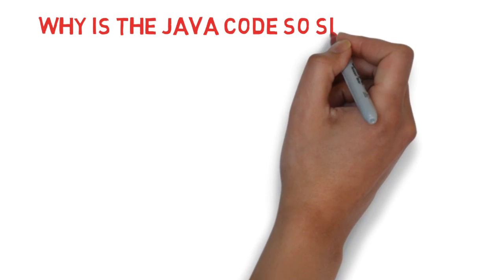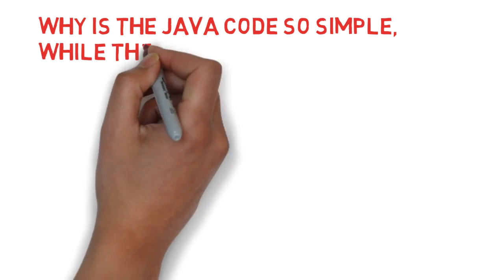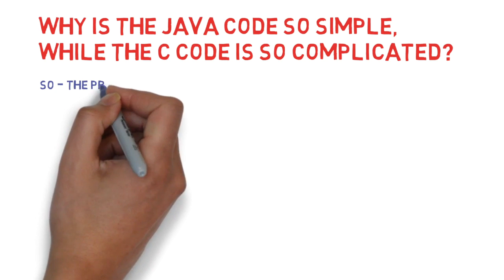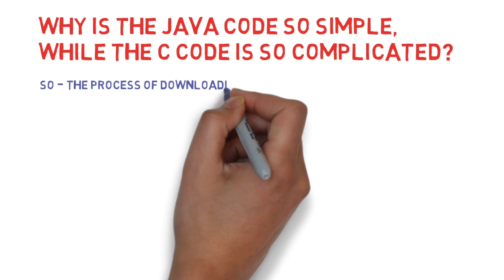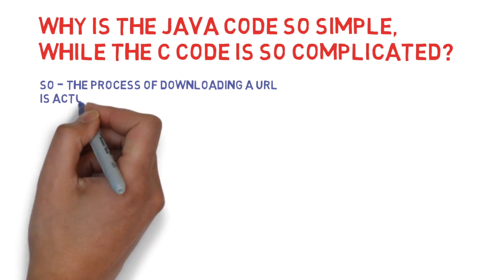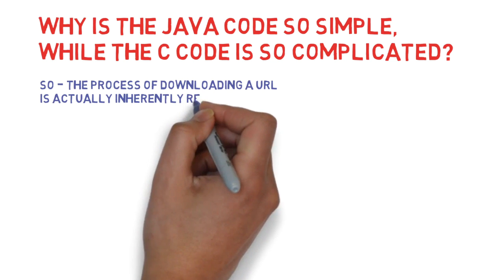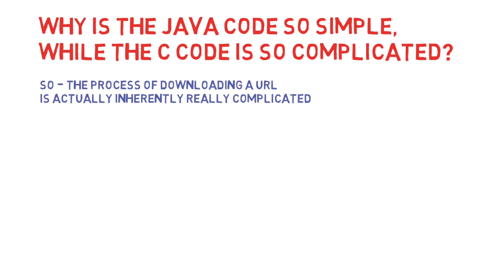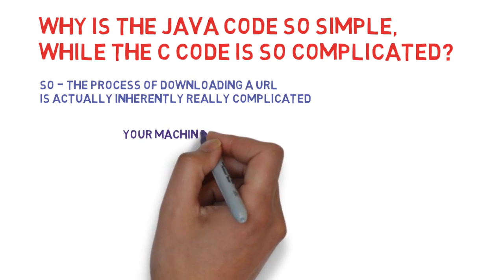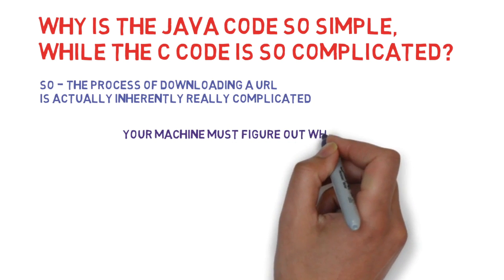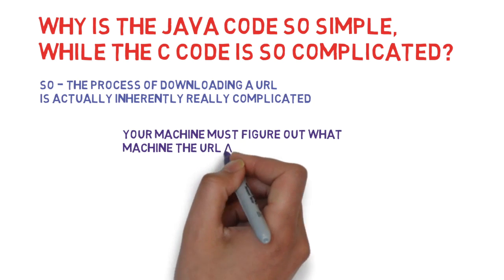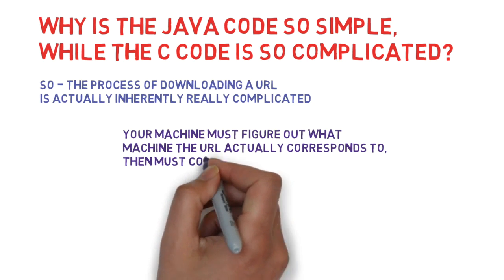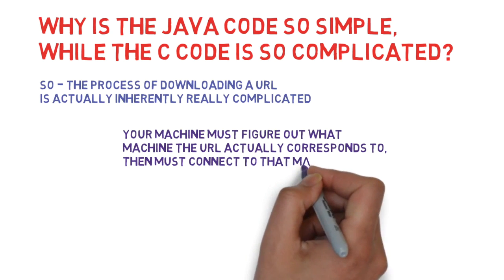A very obvious question is: why is the Java code so simple while the C code is so complicated? The process of downloading the contents of a URL is actually inherently complicated. There is nothing simple about the objective. There's a whole bunch of things going on behind the scenes. Your machine must figure out what machine the URL corresponds to, connect to that machine, ask for the contents, and then parse and understand those contents.